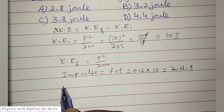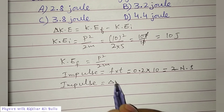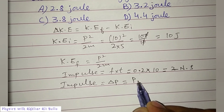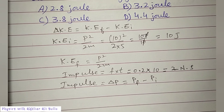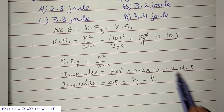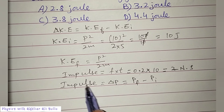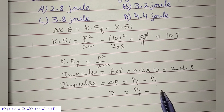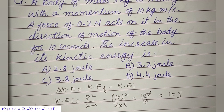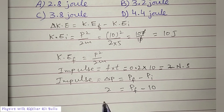As we know, impulse equals change in linear momentum, which equals final linear momentum minus initial linear momentum. We have calculated impulse as 2. So 2 equals final linear momentum minus initial linear momentum, which is given as 10.